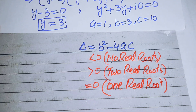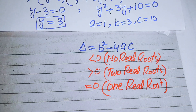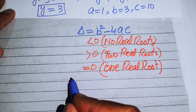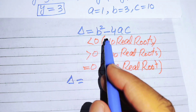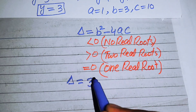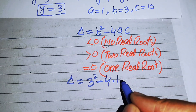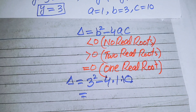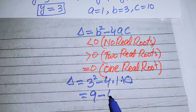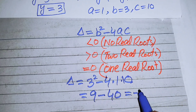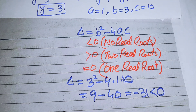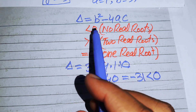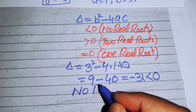We substitute the values of a, b, and c: delta equals 3 squared minus 4 times 1 times 10, which gives 9 minus 40, which equals minus 31. Since minus 31 is less than 0, this quadratic equation has no real roots.